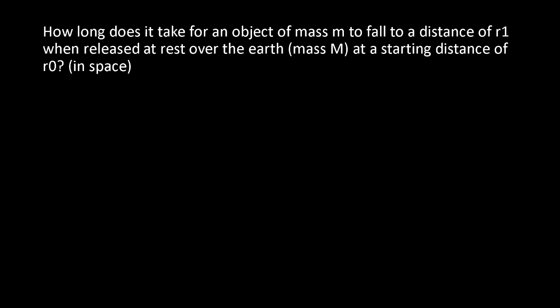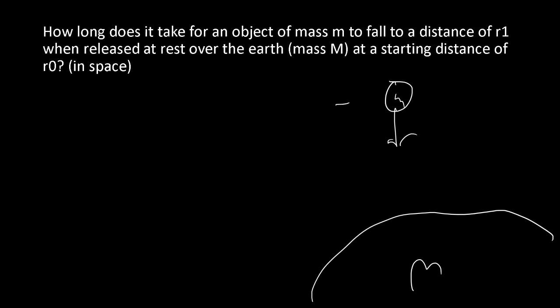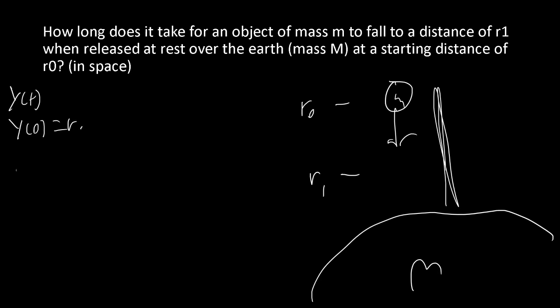So this is the problem — this is not the exact phrasing of it; it was given to me by a friend who got it from his physics teacher. Basically, we have some object with mass lowercase m falling towards the Earth with mass uppercase M. It starts at a distance of r₀, and at a certain point it's going to reach distance r₁. We need to figure out how long it takes to get there. We're going to use a function y of t, which represents the distance between the object and the Earth based on time. So y(0) = r₀, and since the object starts at rest, y'(0) = 0.